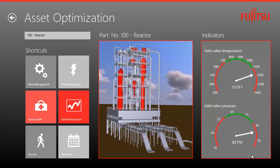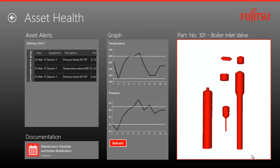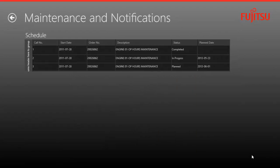When I click on Asset Health, the application shows me the history of alerts pertaining to refinery unit 1. I can also see the history of pertinent KPIs such as temperature and pressure referencing the components in question.